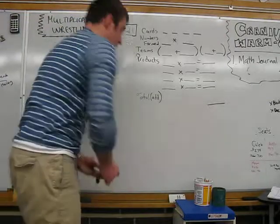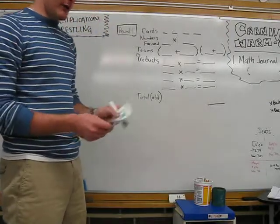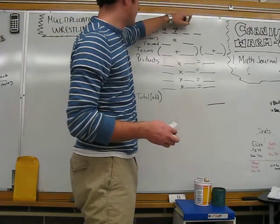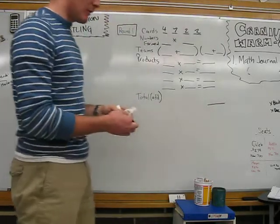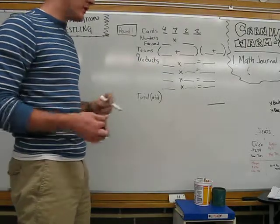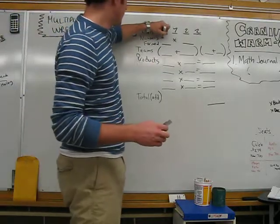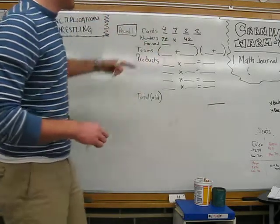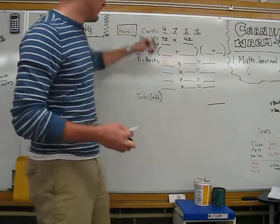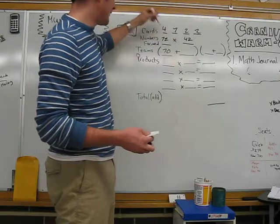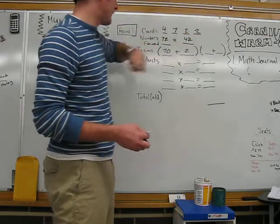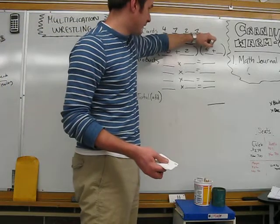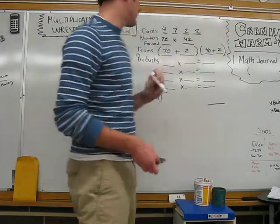So, the first thing you're going to do is draw four cards. I drew a seven, a four, a two, and another two. Jot those down here: four, seven, two, and two. Now, I'm going to form two two-digit numbers from that. So, let's make a seventy-two and a forty-two. That seventy-two is going to be one team, and the tens place is seventy, and the ones place is two. The forty-two is going to form a team as well. The tens place is forty, and the ones place is two.